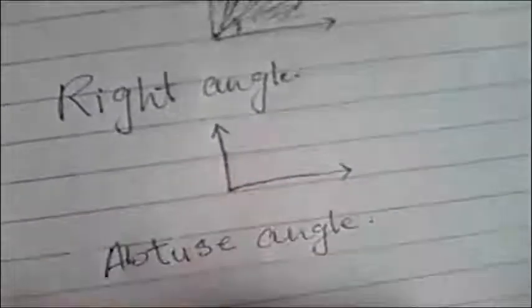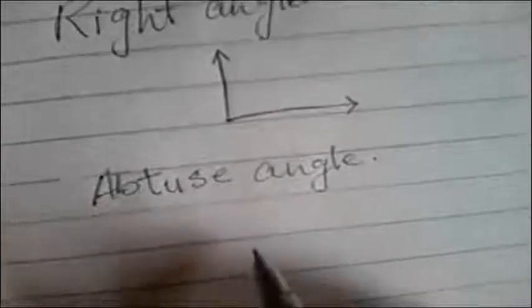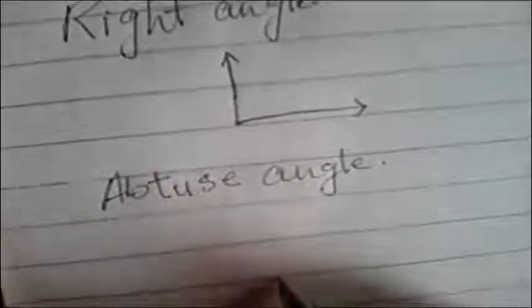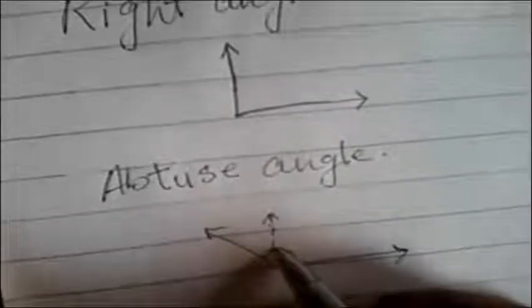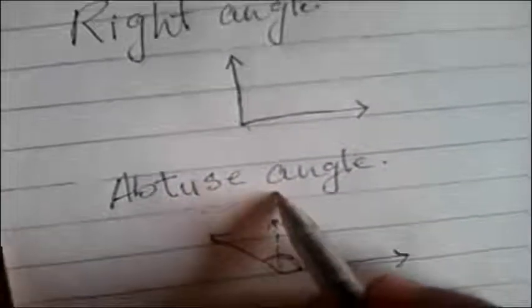The third kind is obtuse angle. What is obtuse angle? Obtuse angle is an angle which is greater than a right angle. Any angle which is greater than this right angle — like this — is called an obtuse angle.